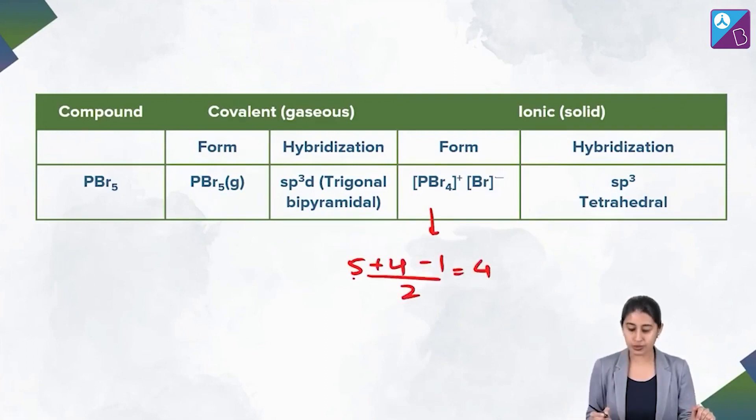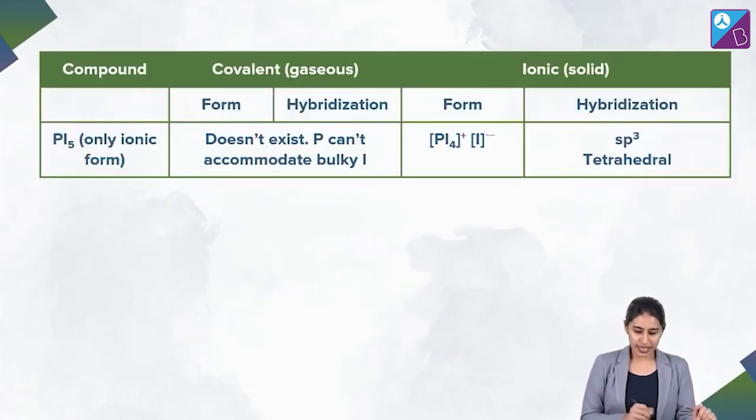Now the next one, PI5 does not exist as a covalent molecule. It only exists as ionic species like PI4+ I- similar to PBr5. The way it exists is PBr4+ and Br-, similar here sp3 hybridization, geometry is tetrahedral.